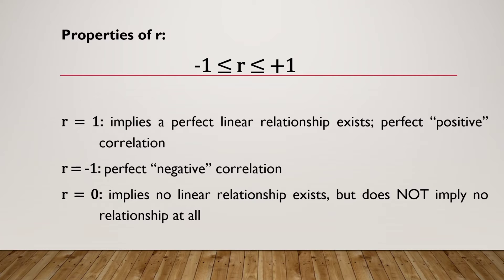The range of r is: negative one ≤ r ≤ positive one. If r equals one, it implies a perfect positive linear relationship. If r equals negative one, that is perfect negative correlation. If r equals zero, it implies there is no linear relationship between the two variables, but it does not imply no relationship at all — the relationship could be non-linear, such as exponential or logarithmic.